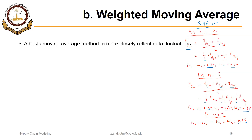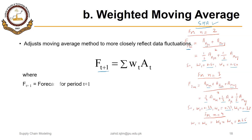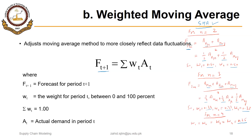In that case we can use weighted moving average. This method adjusts the moving average method to more closely reflect data fluctuations. We can assign different weights to the actual demand or sales data for different periods. The forecast for period t+1 equals the weight assigned for each period multiplied by the actual sales for that period, and the sum of the weights must equal 1.